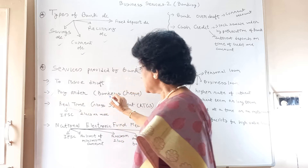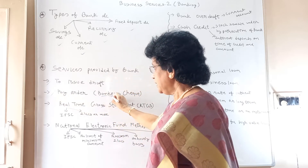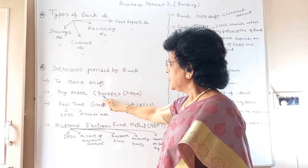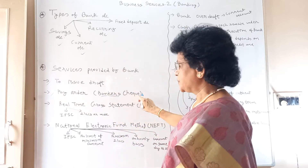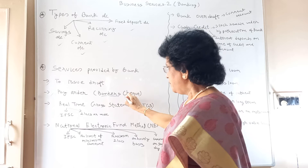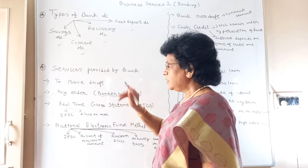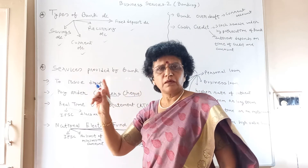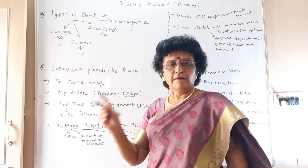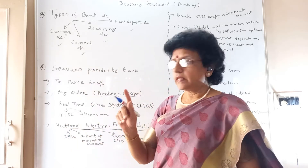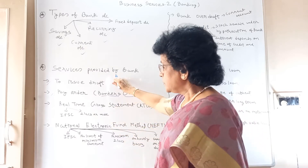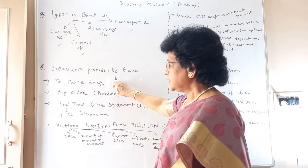Next is pay order, also called a banker's check. It is very much similar to the draft. The bank is ordering another bank to make the payment — that is called a pay order. So these two are very much similar.